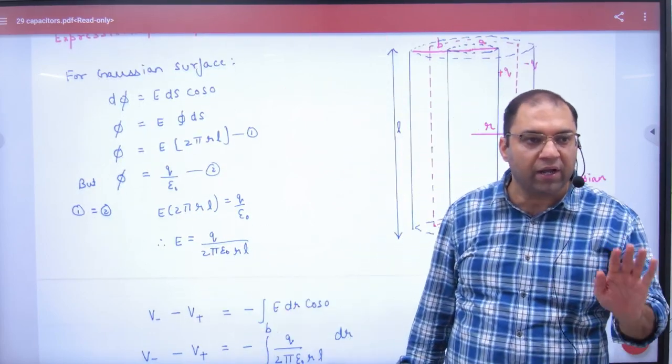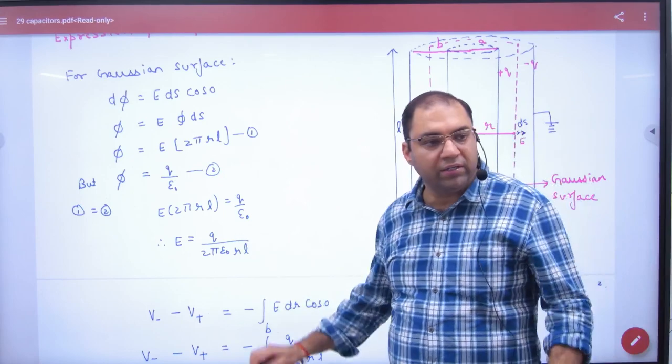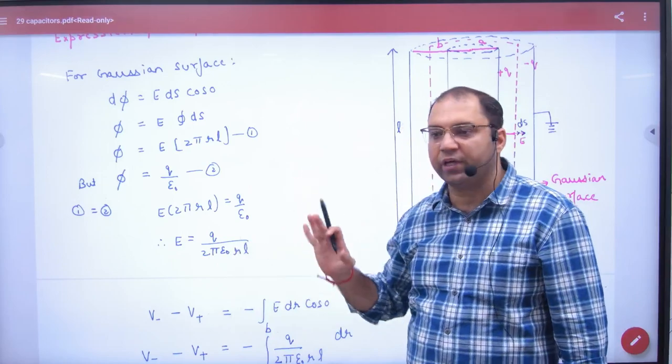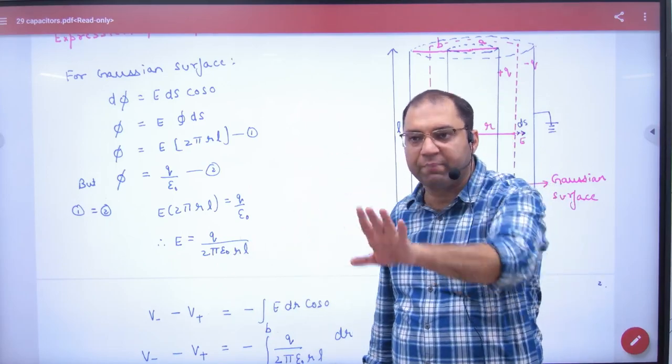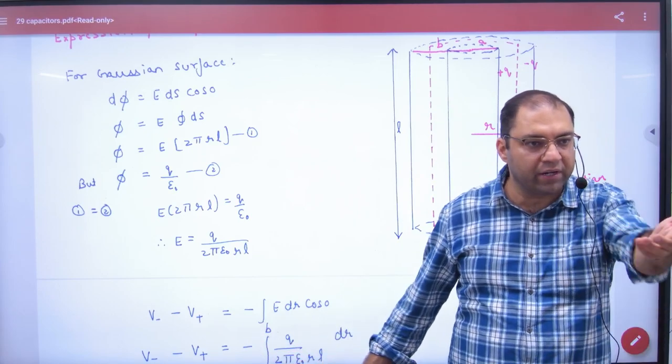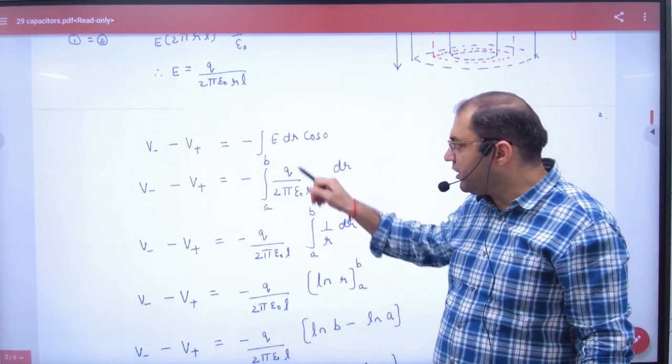If you don't want to use Gauss theorem, then you have to note E's direct formula. Now start from here. In cylinder, E's formula, this is the formula, you have to keep 4-5 steps. In cylinder, R distance E's formula, in potential difference put E.